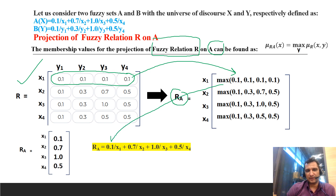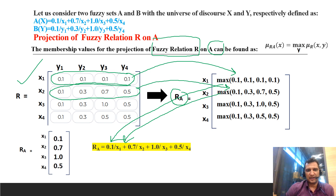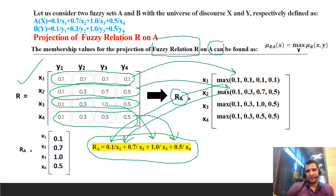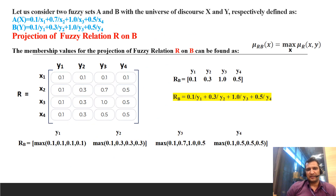For the second row we have 0.1, 0.3, 0.7, and 0.5 — the maximum is 0.7. For row 3, the maximum value is 1, so we put 1. For the fourth row, the maximum value is 0.5. This gives us the basic solution required for questions 1 to 4. In the same slide, I am also calculating fuzzy relationship R on B.